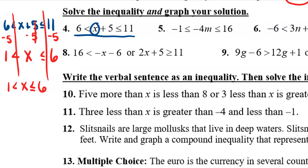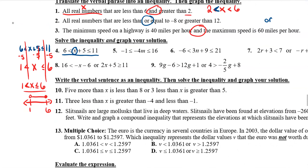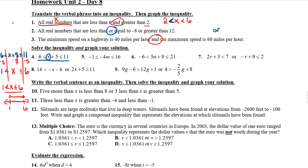Then it also says to graph, and inequalities always look like line segments. It's just going to be a line segment that goes from one up to six. I have an open circle at one because there was no line underneath on this inequality, and then a closed circle at six. And then I just draw a line in the middle, because x is everything between one and six. So that is it for number four.